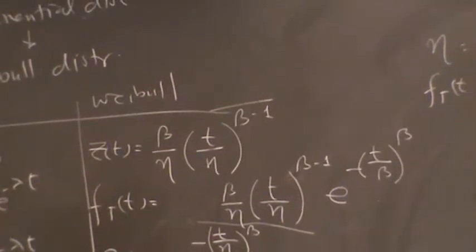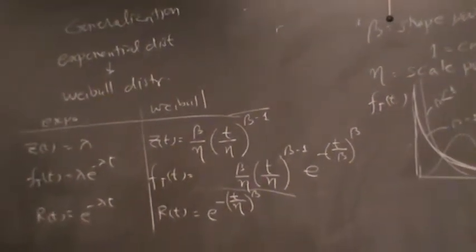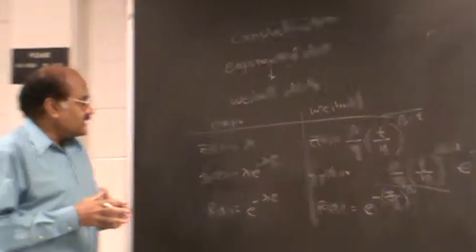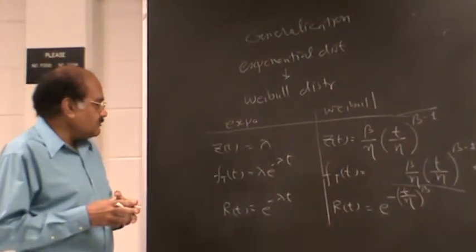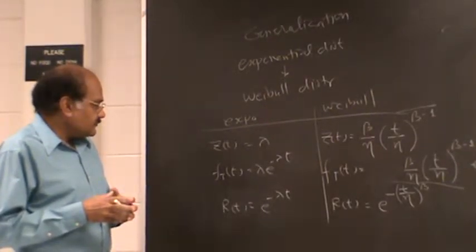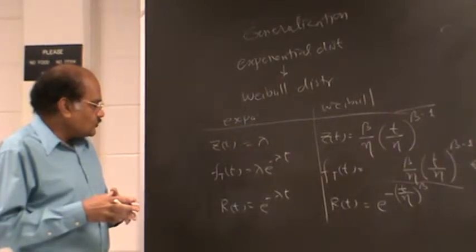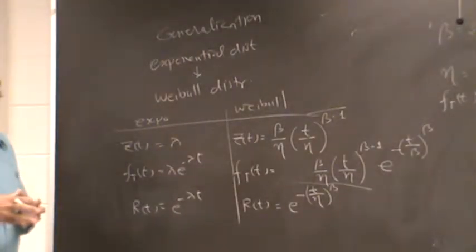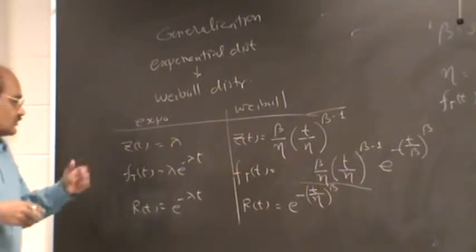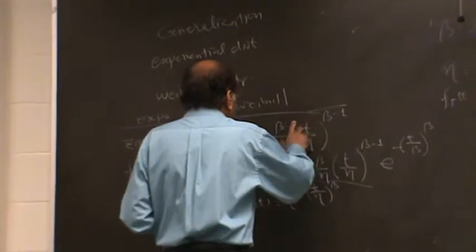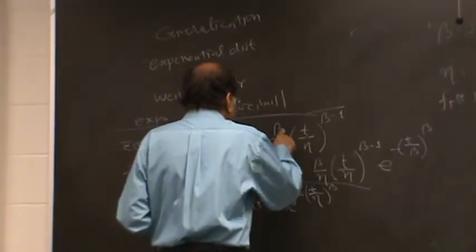The question is: if beta is equal to 1, does it become exponential? Yes, that's true. And you will notice that when beta is equal to 1, this term will drop off, and so lambda is equal to beta divided by eta.